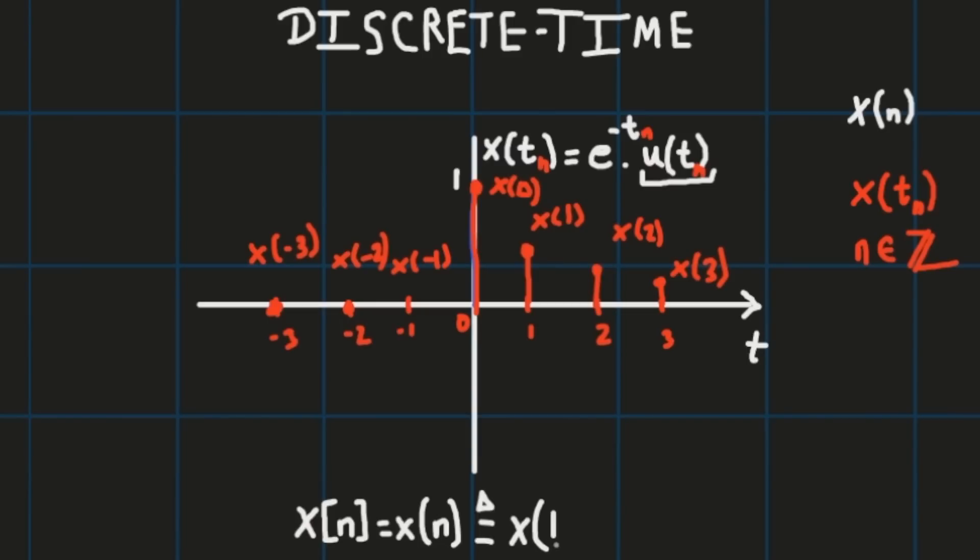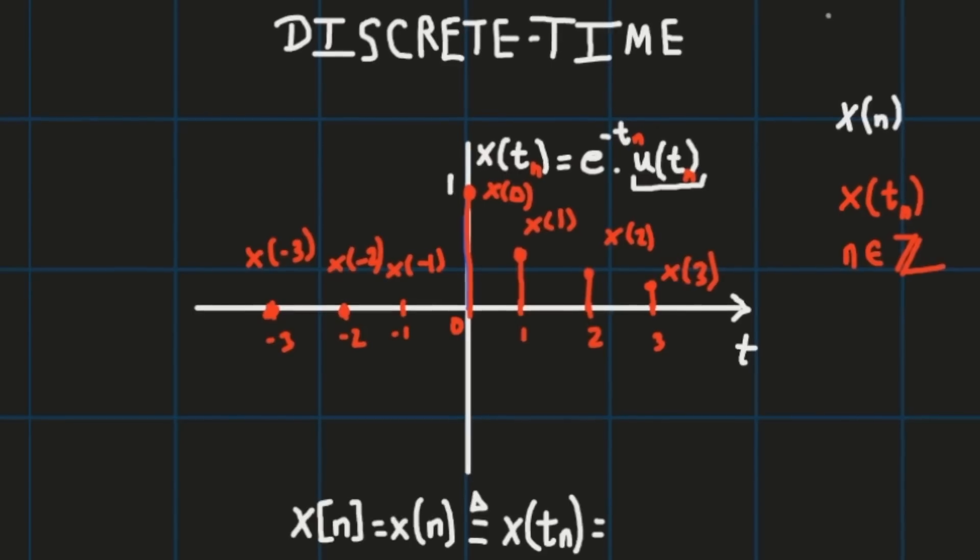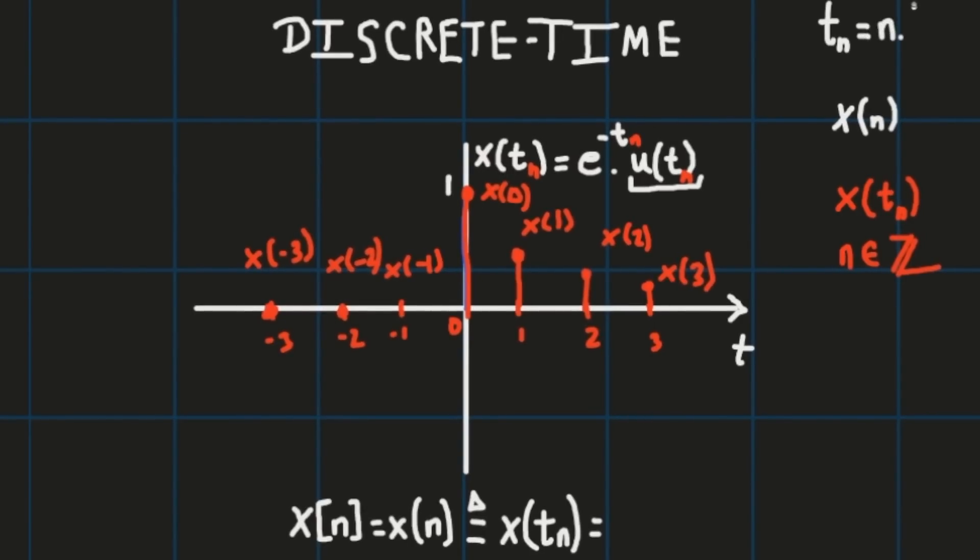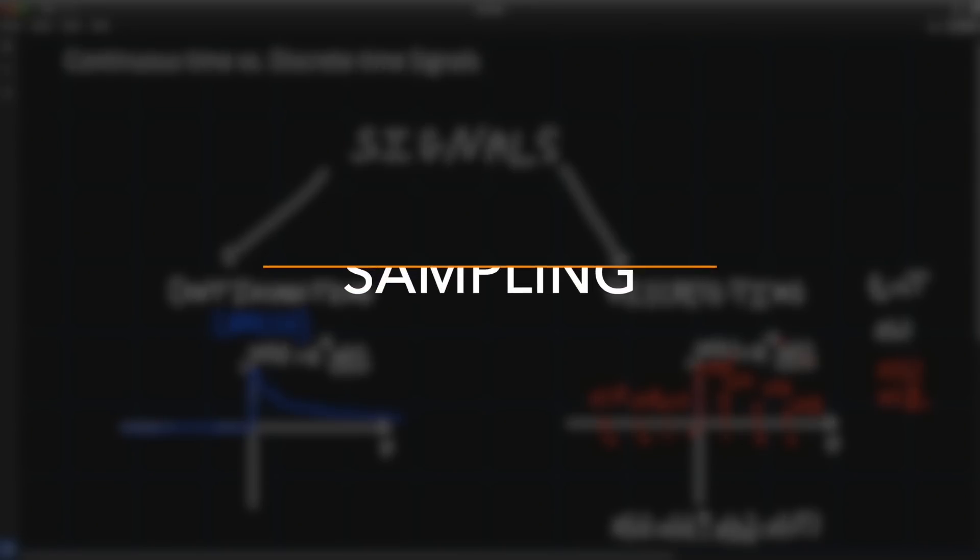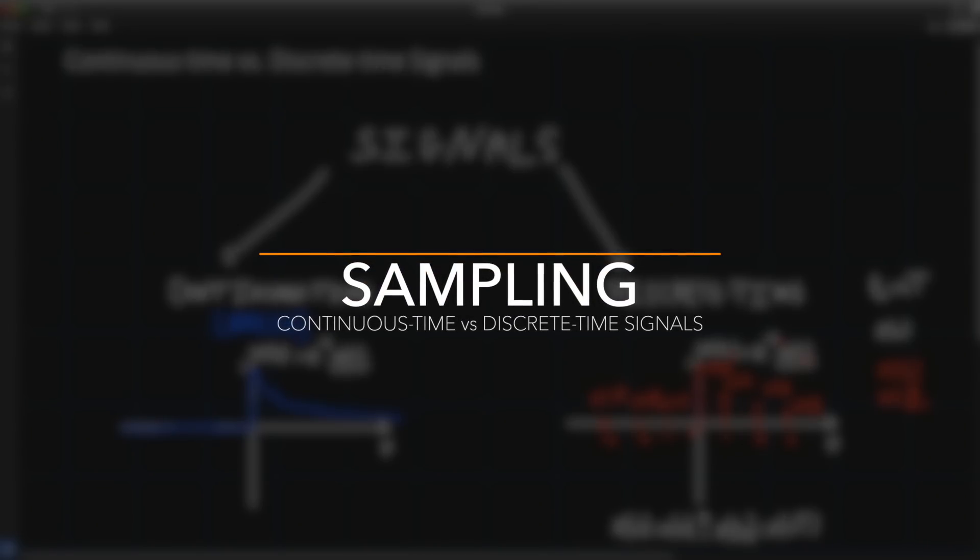But since we're going to restrict ourselves with equidistant sampling, t_n is actually n times a period T. So this is referred to as the sampling period. This is x sampled at time n times T. Here's an example where we sampled our continuous signal x(t) at regular instances of period which in this case is T equal to one.